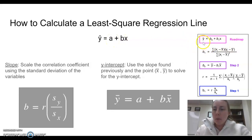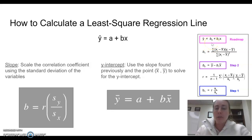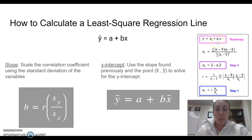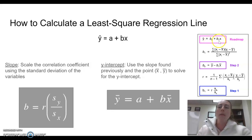Over here on the right you can see that y-hat equals b-naught, or b-sub-0, plus b₁x. In this particular example, they're using b-naught to represent the y-intercept and b-sub-1 to represent the slope. That's consistent with the idea of the y-intercept being a starting value — b-naught being where you start, and b₁ being the multiplier, that slope, that rate of increase or decrease.